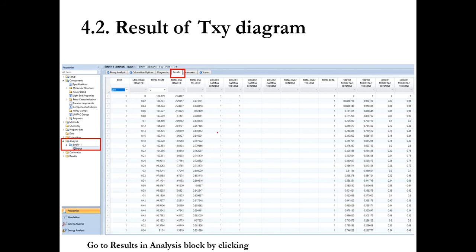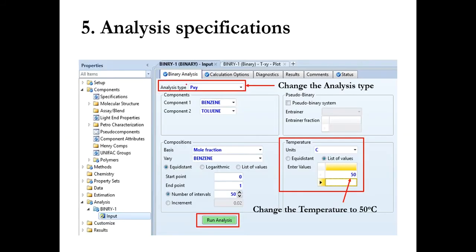Similarly, you can check the results over here. Then go to analysis type, change it to PXY and in temperature specify the value of 50 degree centigrade and again run analysis.